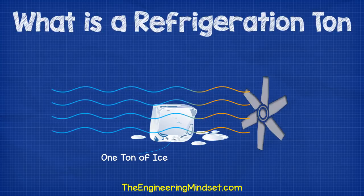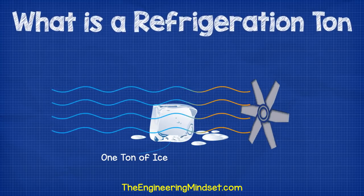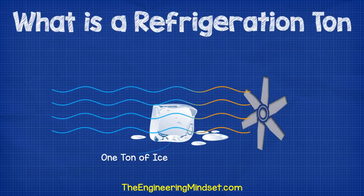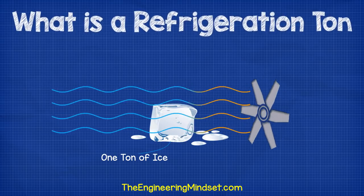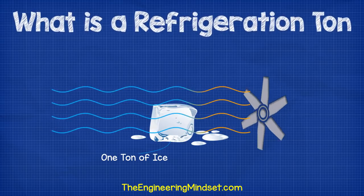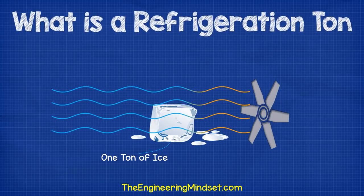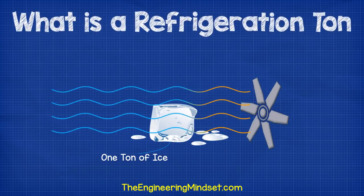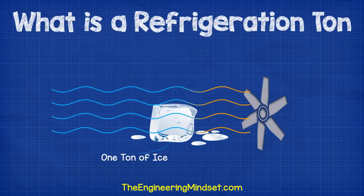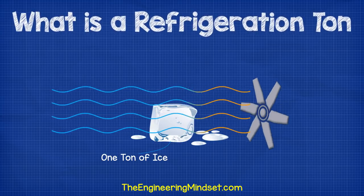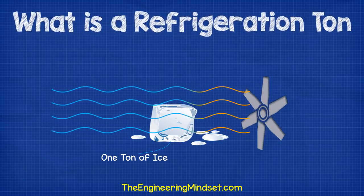The term Refrigeration Ton came about in the late 1800s. This is when blocks of ice were used in air handlers to provide cooling — they would literally order blocks of ice by the ton. This would sit directly in the flow of the warmer supply air, which melted it and carried the cold air away into the building. So a ton of ice would provide a ton of cooling.